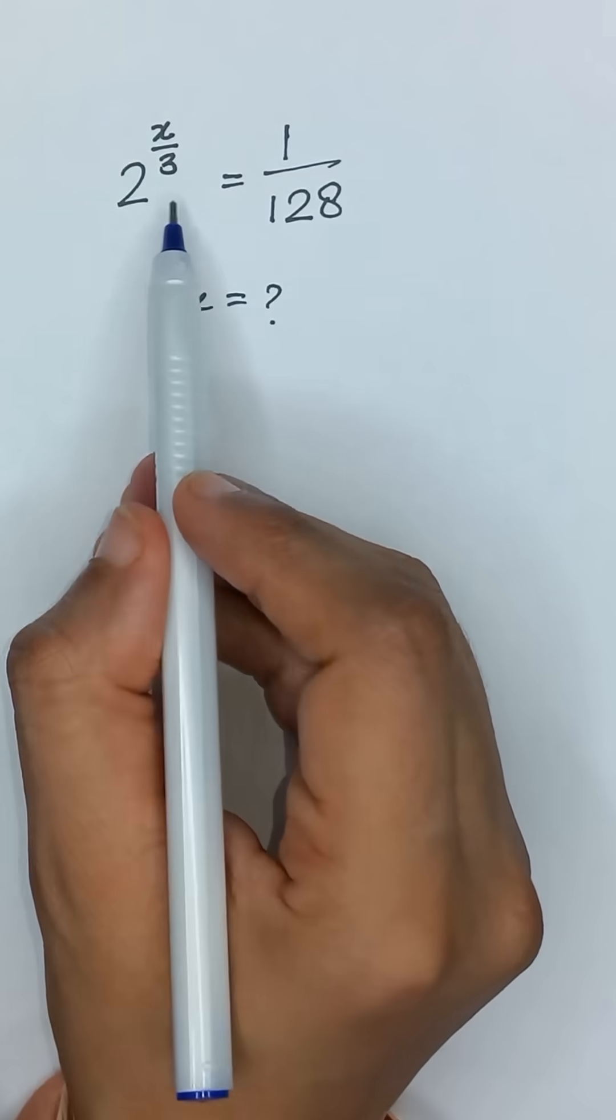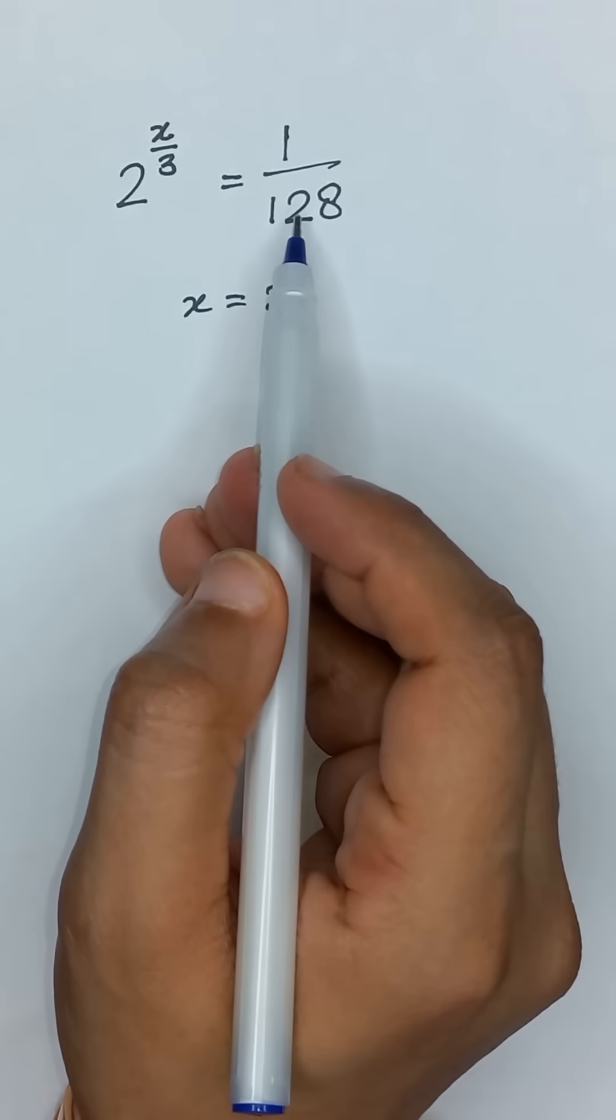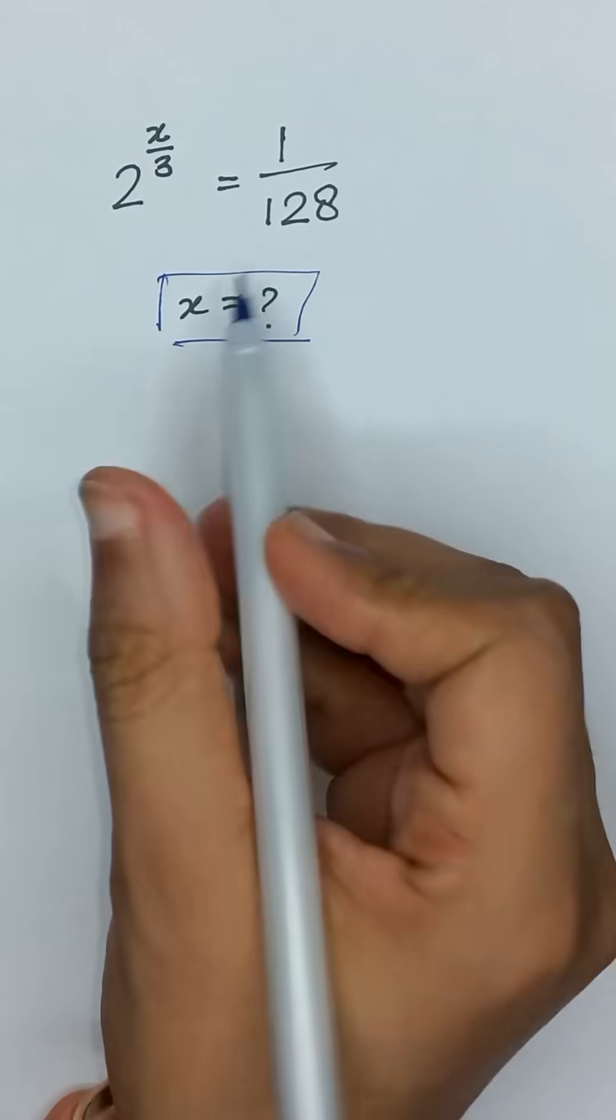2 to the power x divided by 3 is equal to 1 divided by 128, and we will solve this equation for x.